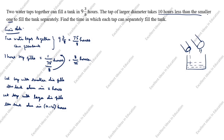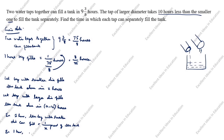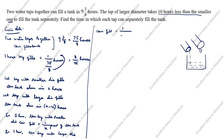The larger diameter takes 10 hours less than the smaller one, that is why x minus 10 hours. In 1 hour, the tap with smaller diameter can fill 1/x part of the tank. In 1 hour, the tap with larger diameter can fill 1/(x minus 10) part of the tank. So we write: 1/x + 1/(x minus 10) equals 8/75.